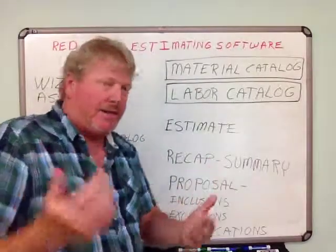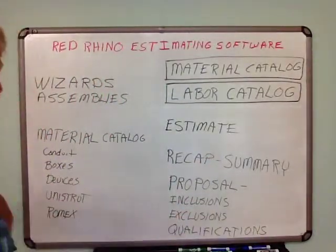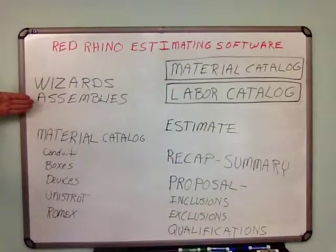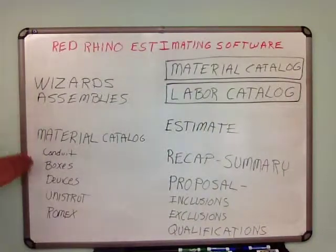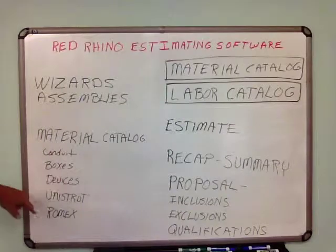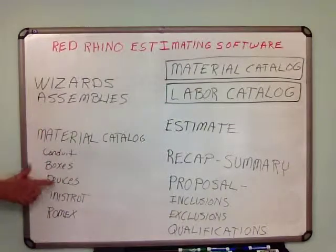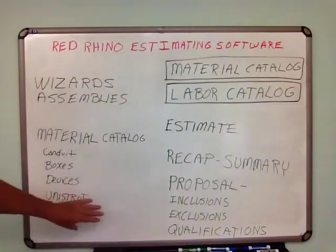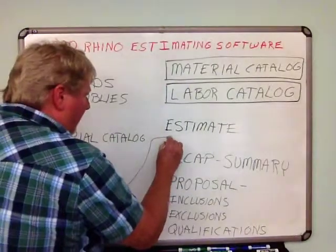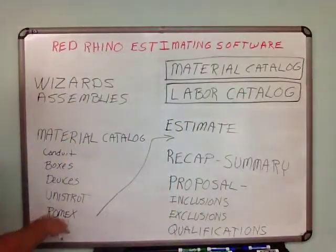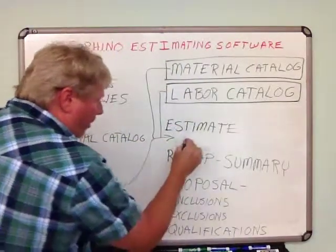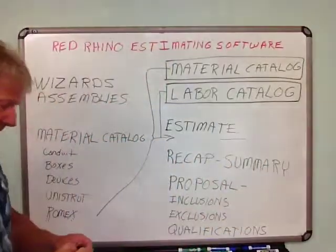Here's how it works. On your estimate — I'm going to step out of the way so you can see the whiteboard. I already explained that wizards and assemblies are the two speed tools we have. There's also a material catalog with thousands of materials in it. When you drill down into it, you'll find conduit, boxes, devices, Unistrut, or Romex. You input the quantity, and it spits out the labor and material cost in your estimate. When you throw in 650 feet of Romex, it pulls the material price from the material catalog and the labor from the labor catalog, and shows you the total material price and total labor.